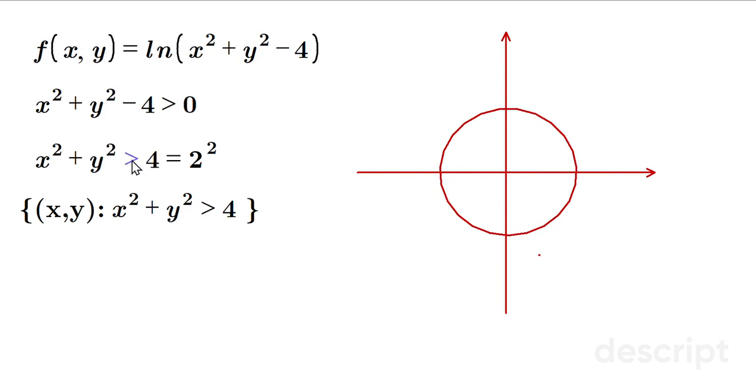Remember, our inequality is greater than 4, or greater than 2 squared if you like. So for that reason, take this circle and just dash it this way, and that indicates the boundary is not included.